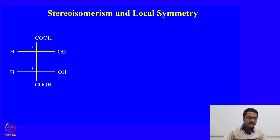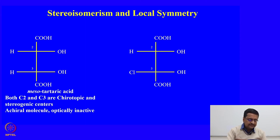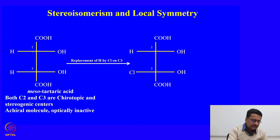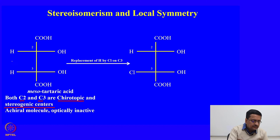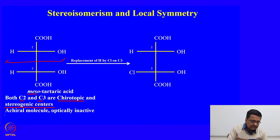Now let us look at another example: mesotartaric acid. In this case, C2 and C3 are both chirotopic and stereogenic centers because in both cases you have different substitutions present at these carbons. This molecule has a mirror plane present. Therefore this molecule is called a meso compound — mesotartaric acid — and is an achiral compound, hence optically inactive.